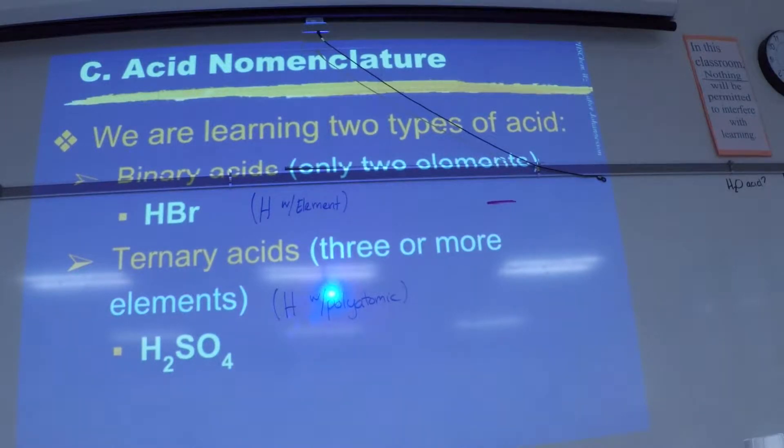On here tells you what type of acid it is. If it's on the periodic table it's just binary. If it's one of these, then it's ternary. The reason why we need to know which one it is, is because there's a slight difference in how you name it.